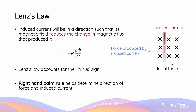In other words, this induced current will be flowing in a direction such that the resultant force produced by this induced current in the magnetic field is always opposing the initial force that created the change in flux. Lenz's law accounts for the negative or minus sign in Faraday's law equation. The minus sign is here to signify that the EMF and the resultant induced current will always be opposing the change in flux.